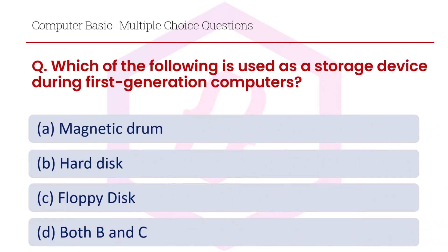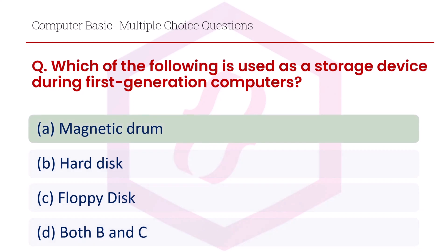Which of the following is used as a storage device during first generation computers? Option A magnetic drum, option B hard disk, option C floppy disk, option D both B and C. The right answer is option A, magnetic drum.